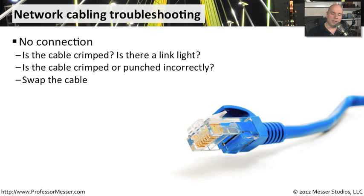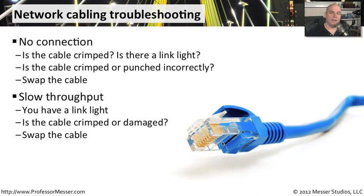You may want to cut the cable off, put another connector on the end, re-crimp it, and see if that solves the issue. If you want to be sure it's not the cable, one of the simplest things you can do is simply replace it — run a connection across the floor with a completely different cable and see if the same problem occurs. If throughput is not as fast as expected, check whether the link light is turning on or off, and again a very simple test is to simply swap out the cable.